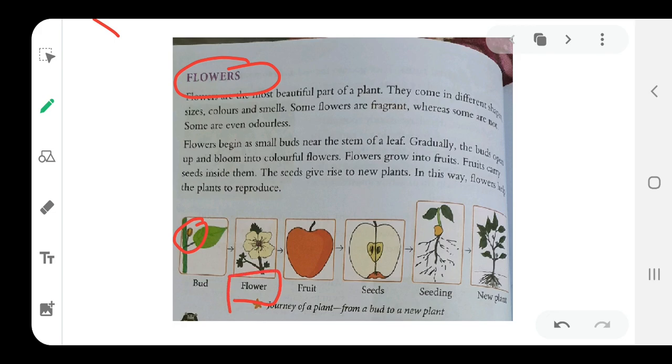The bud opens up and blooms into a beautiful flower. This flower further can get converted into the fruit. Inside the fruit we have seeds. From the seeds we plant the seed and then we get a seedling, and after the seedling there is a new plant. This is the journey of a plant from a bud to a new plant.